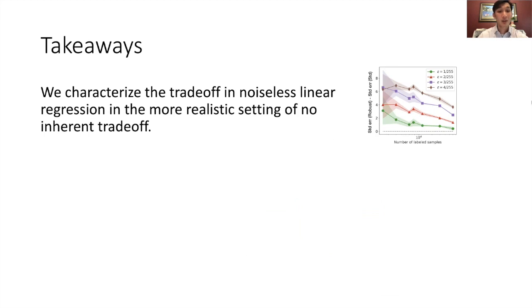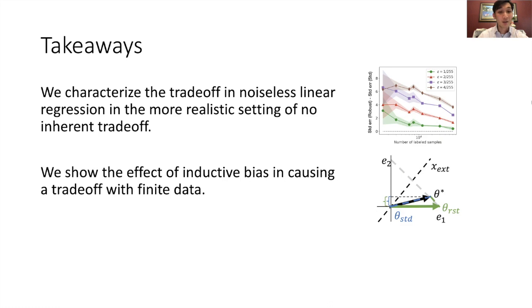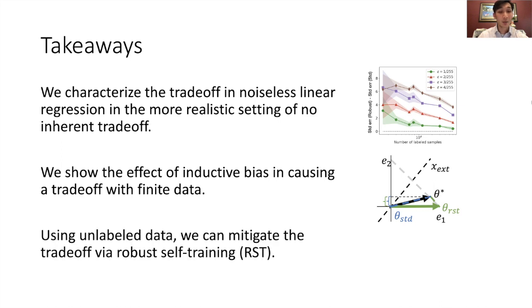So to recap, we characterize the trade-off in noiseless linear regression in the more realistic setting of consistent perturbations that cannot change the true target, and where the hypothesis class is well-specified, meaning that there is no trade-off with infinite data. We show the effect of inductive bias in causing a trade-off with finite data. In particular, the min-norm inductive bias should be adapted to the data distribution. Intuitively, having some unlabeled data should help here. We proved that using unlabeled data via robust self-training, we can indeed mitigate the trade-off in noiseless linear regression. We also showed empirically across various adversarial training algorithms and perturbation types that robust self-training mitigates the trade-off.